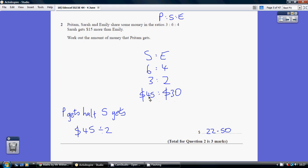So that establishes the fact that Emily's 4 shares are worth $30, and Sarah's 6 shares are worth $45.